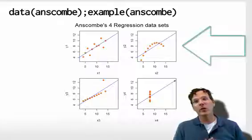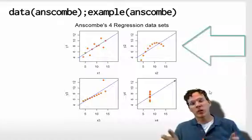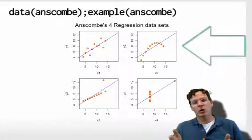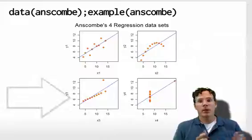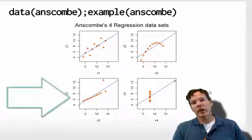The second one, clearly there's a missing term in order to address some of this curvature in the data. The third one, there's an outlier.